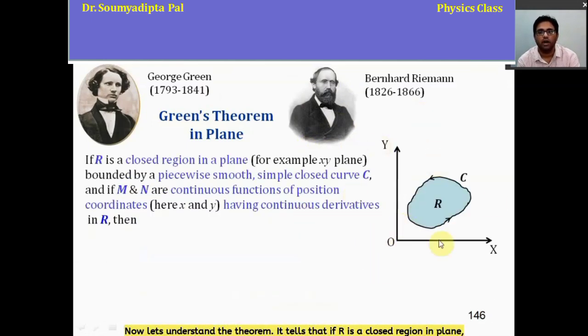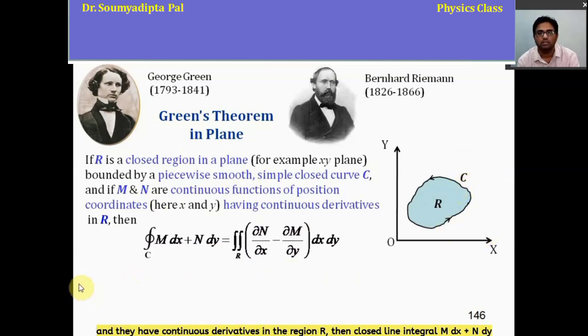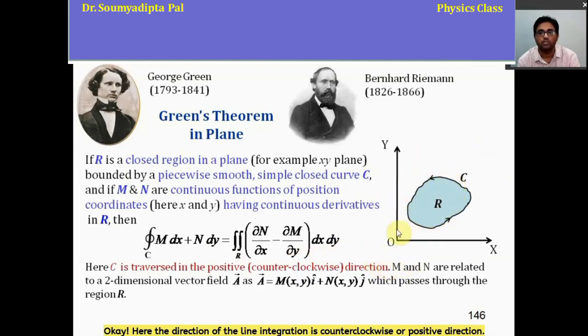It tells that if R is a closed region in plane, for example here xy plane, and it is bounded by a piecewise smooth simple closed curve C, and if m and n are continuous functions of position coordinates, for example here x and y, and they have continuous derivatives in the region R, then closed line integral m dx plus n dy is equal to double integration del n del x minus del m del y dx dy.